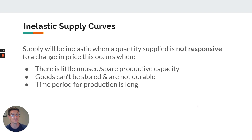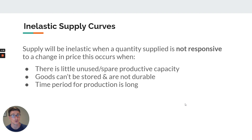So what are the factors that would determine or cause an inelastic supply curve, or something with a PES below one — that 0.33 that we just had? Suppliers are not responsive to a change in price, which is important because suppliers would ordinarily want to be responsive to a change in price, because that means they can make more profits.